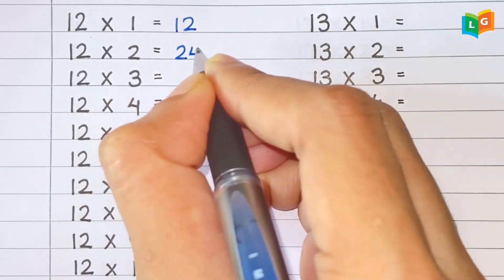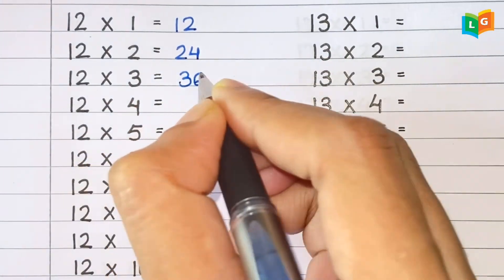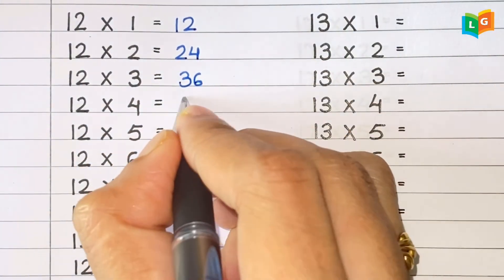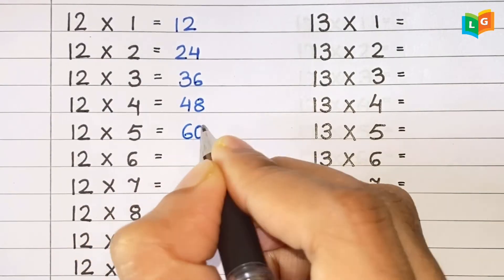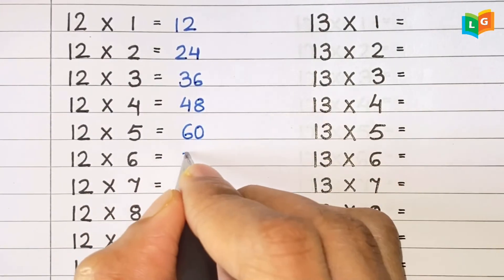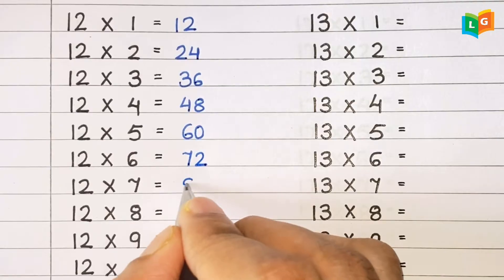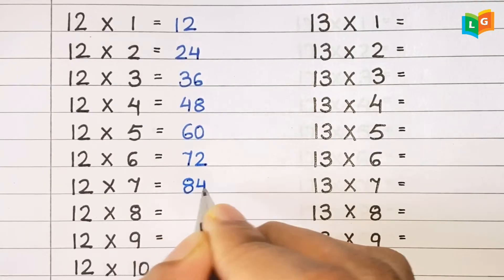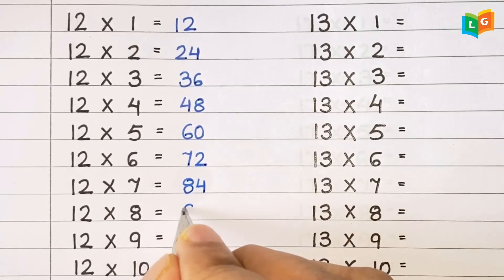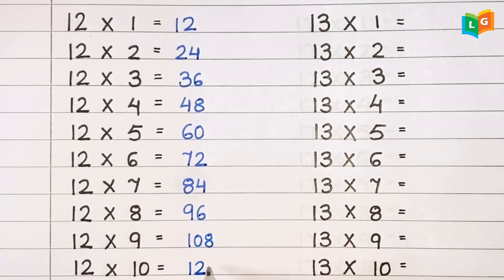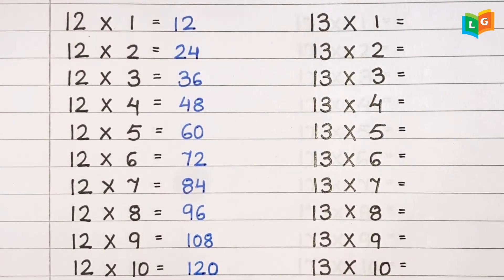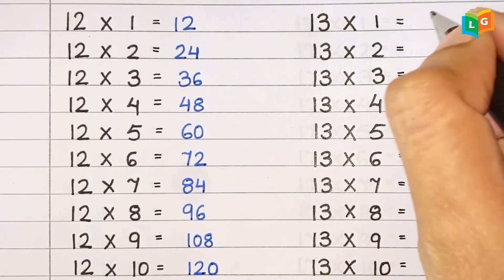Now let's see table of 12. 12 1s are 12, 12 2s are 24, 12 3s are 36, 12 4s are 48, 12 5s are 60, 12 6s are 72, 12 7s are 84, 12 8s are 96, 12 9s are 108, 12 10s are 120.